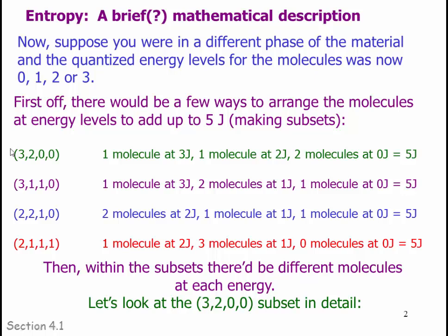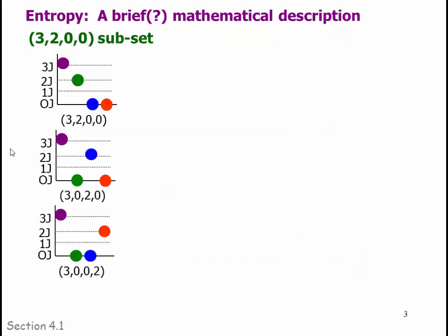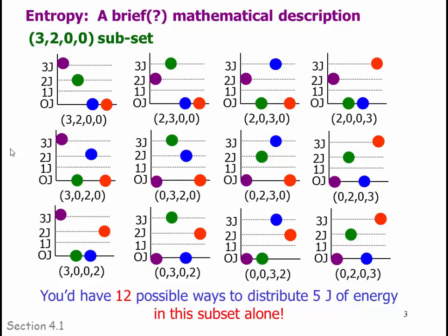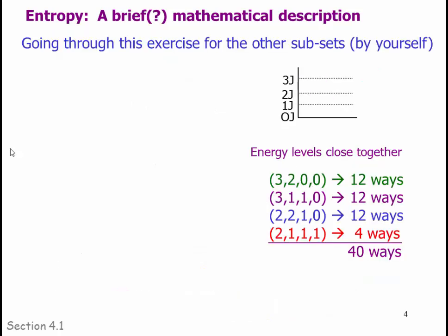Within the subsets, there would be different molecules at each energy. Looking at the subset with energies 3, 2, 0, and 0 in detail, there are 12 ways to arrange 4 molecules at those energy levels. Going through the 3, 1, 1, 0 subset there are 12 ways, and for the 2, 2, 1, 0 subset there are also 12 ways. The 2, 1, 1, 1 subset has only 4 ways to distribute. The net sum of all these ways is 40.